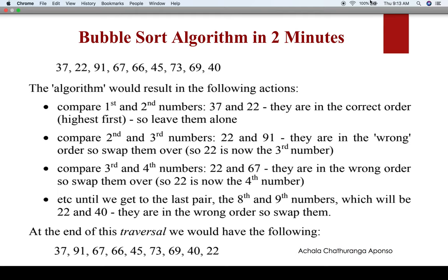This algorithm would result in the following actions. First we compare the first and the second numbers. In this example, we are trying to have it in the highest-first order — highest first, next highest second, and the smallest one at the end.